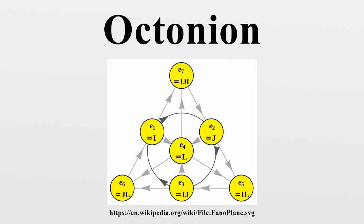The table can be summarized by the relations, where epsilon is a completely antisymmetric tensor with value plus 1 when IJK equals 123, 145, 176, 246, 257, 347, 365. With E0 the scalar element, and IJK equals 1 to 7, the above definition though is not unique, but is only one of 480 possible definitions for octonion multiplication with E0 equals 1. The others can be obtained by permuting and changing the signs of the non-scalar basis elements.